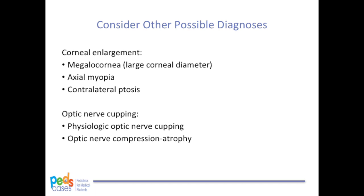Axial myopia may also cause corneal enlargement because there is elongation of the axis of the eye. It is also important to keep contralateral ptosis in mind. A pediatric ophthalmologist will most likely examine the optic nerve, but if optic nerve cupping is observed on fundoscopy, some differentials to consider include physiologic optic nerve cupping and optic nerve compression atrophy.